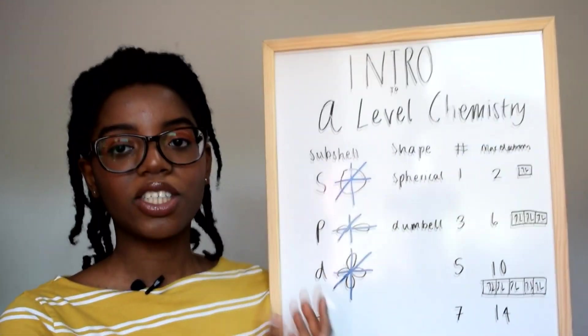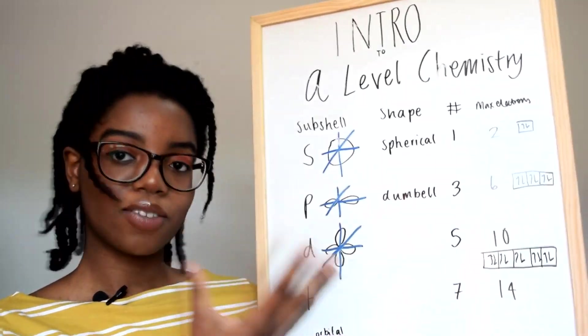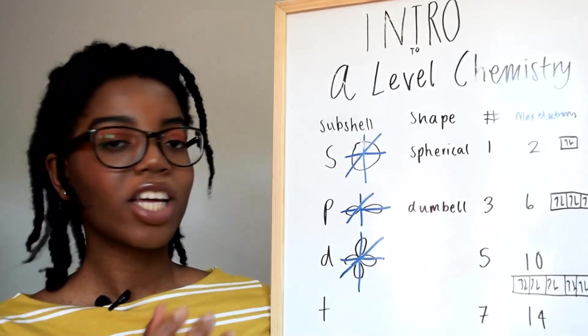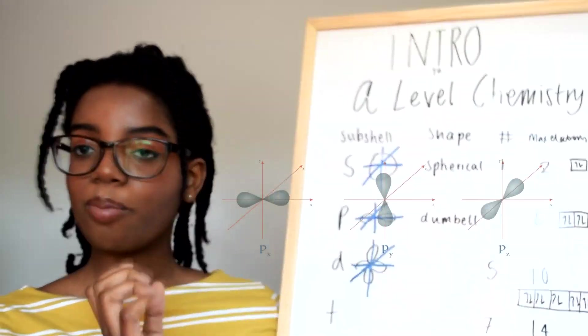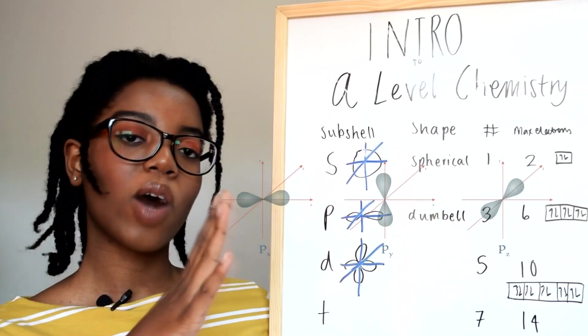With the subshells they all have different shapes where the electrons are. With S it's just a spherical shape, a ball. And P is a dumbbell shape and it can be in any of the axis X, Y, or Z.